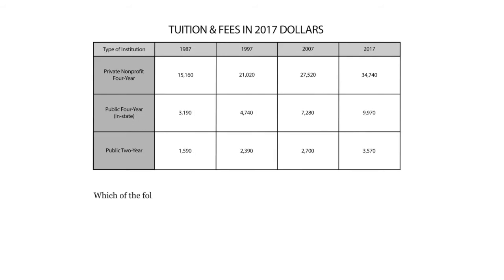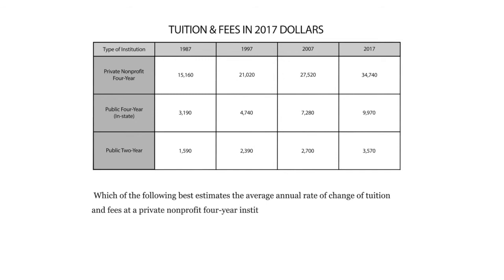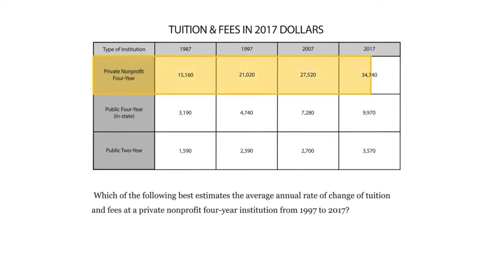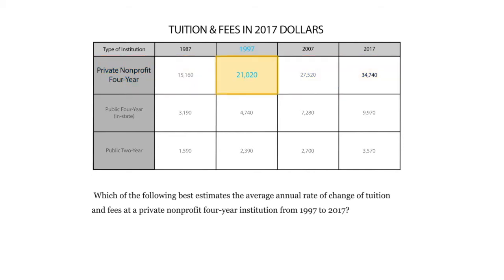So the question is: which of the following estimates is the average annual rate of change of tuition and fees at a private nonprofit four-year institution from 1997 to 2017? The first thing you want to do is be careful on these tables — some can be a little bigger than this one on the test. You want to identify which column and which rows you're looking at. In this case, we're looking at private nonprofit four-year institutions, the 1997 value and the 2017 value.